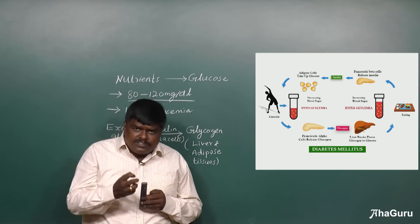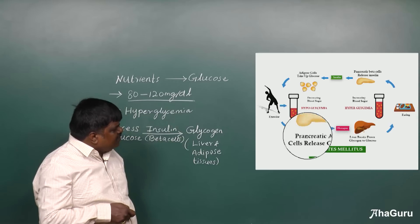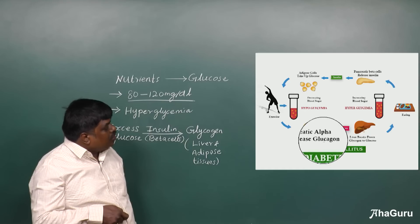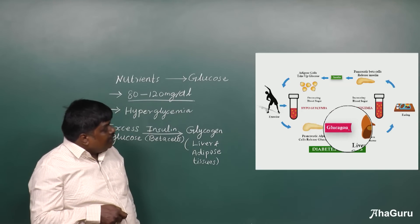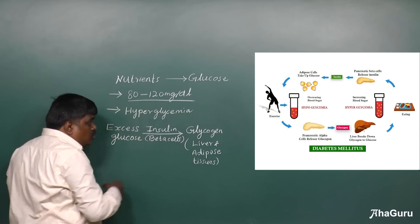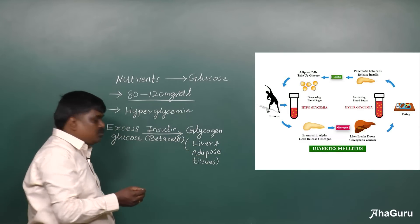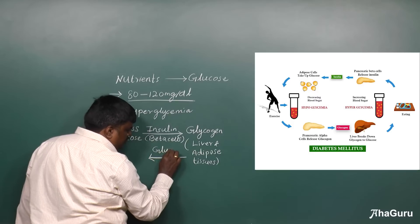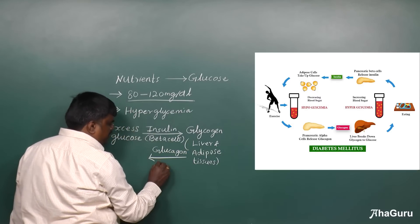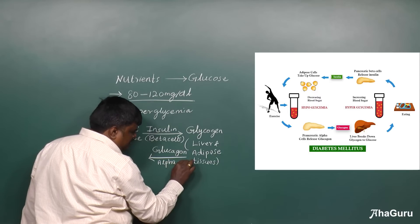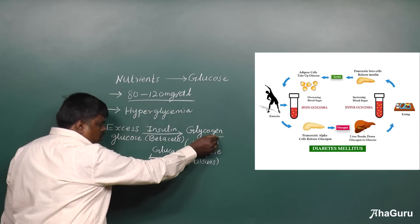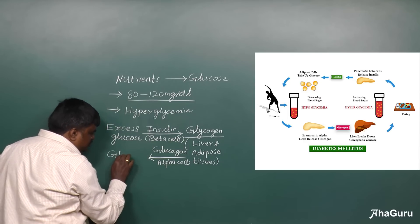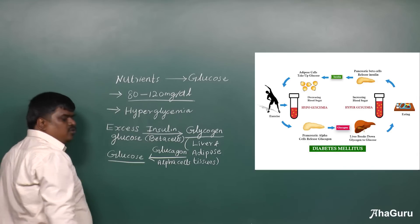Whenever the blood glucose level is low — hypoglycemia — the alpha cells of the pancreas secrete a hormone called glucagon. This glucagon converts the glycogen that is stored in the liver and adipose tissues. So now comes the hormone glucagon. This glucagon hormone, from the alpha cells of the pancreas, converts the glycogen stored in the liver and adipose tissues into glucose.